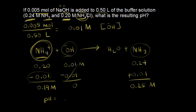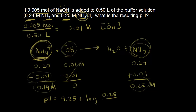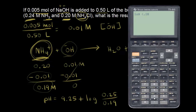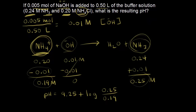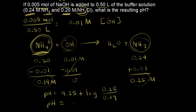Now we plug everything into Henderson-Hasselbalch. pH equals the pKa of 9.25, plus the log of the concentration of the base, NH3, which is 0.25 molar, over the concentration of the acid, ammonium, which is 0.19 molar. The log of 0.25 divided by 0.19 is 0.12. So the pH equals 9.25 plus 0.12, which equals 9.37.